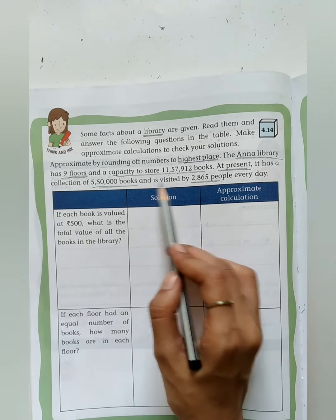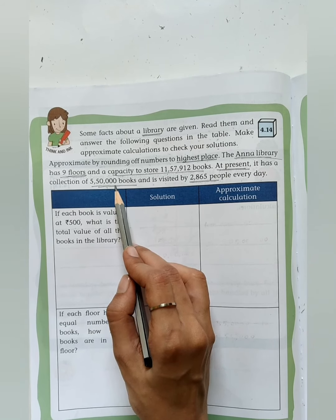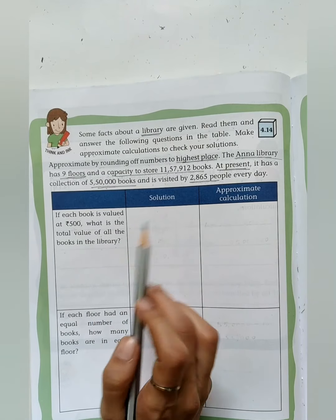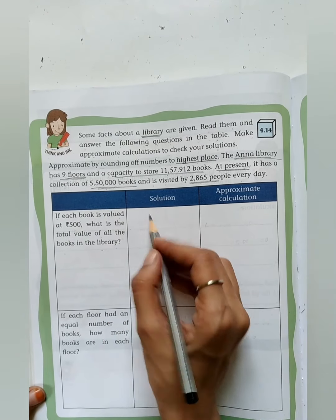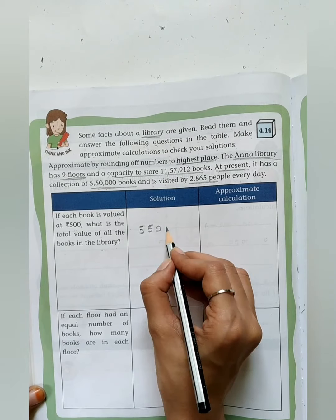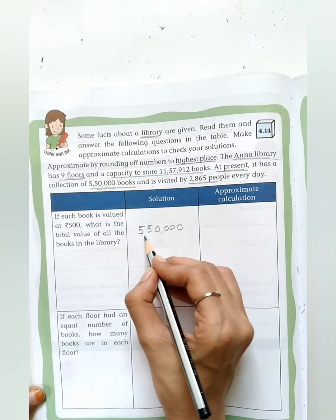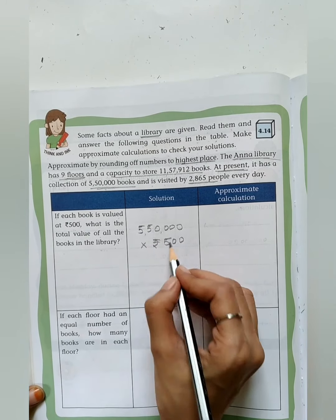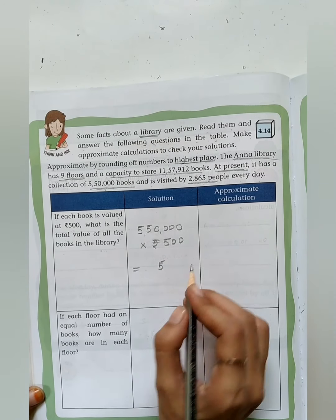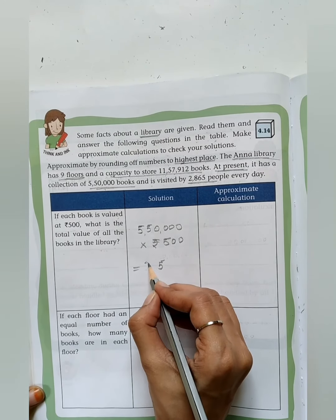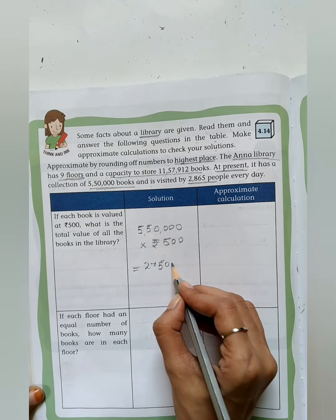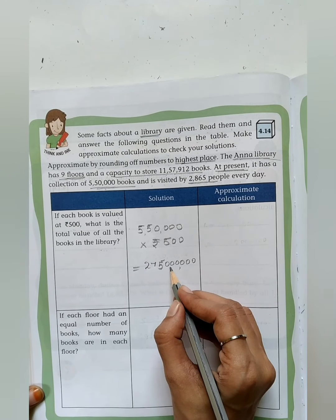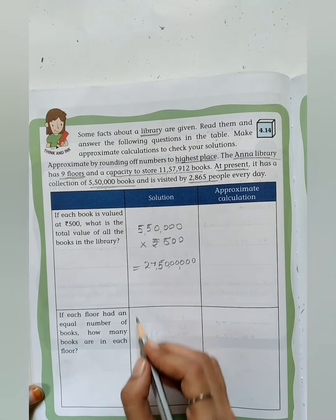See the first question. Each book is valued at rupees 500. Here these many number of books represent. What is the total value of all the books in the library? To find out the total value for these many books, we have to do multiplication. The number is 5,50,000 books into rupees 500. I will do the direct multiplication. 5 into 5 is 25 and remainder 2, carry over. 5 is 25 plus 2, 27. Here above four zeros and again I'm adding two zeros. After that, insert the commas in an appropriate place. This is the answer.